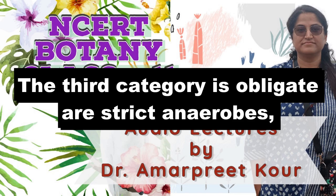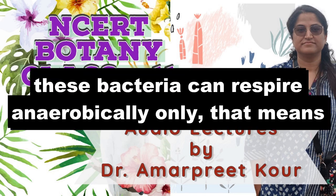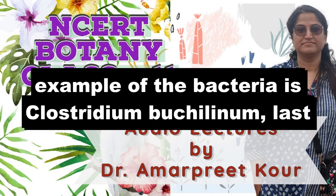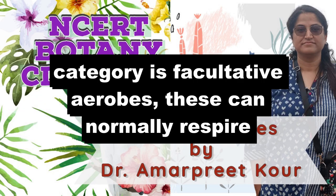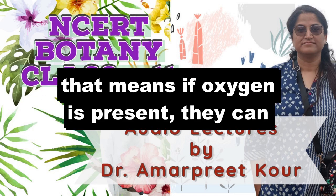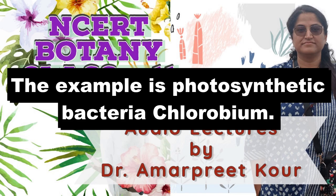The third category is obligate or strict anaerobes. These bacteria can respire anaerobically only; that means they cannot survive in the presence of oxygen. Example is Clostridium butylinum. The last category is facultative anaerobes — these can normally respire anaerobically but are capable of respiring aerobically also. If oxygen is present, they can still survive. The example is the photosynthetic bacteria Chlorobium.